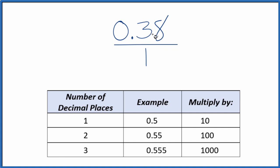Now we need to get this 0.38 to a whole number. So I can see we have one, two decimal places. When you have two decimal places, you can multiply by 100. That'll make this a whole number.